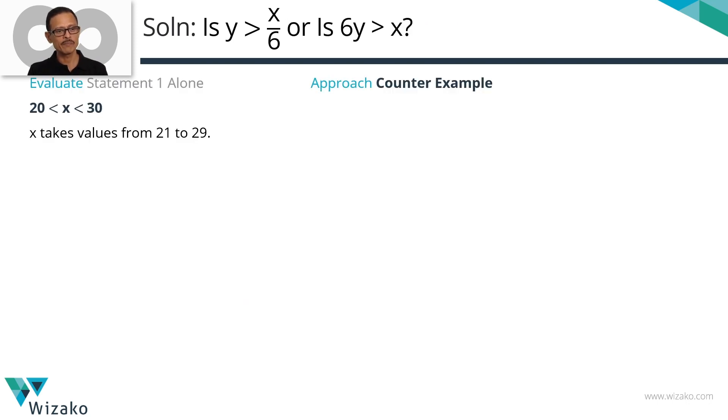Let's get started with the first statement. The first statement says that X lies in the open interval 20 to 30. And we know that X is a two-digit positive integer from the question stem, which means the values that X will take are integer values starting from 21 all the way up to 29 because it's in the open interval 20 to 30.